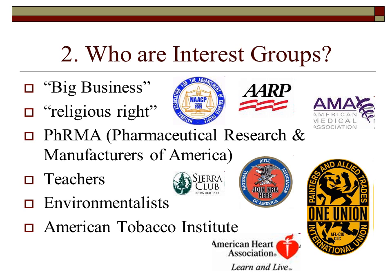Who are interest groups? There are many examples. Some have names, some don't. Some are referred to by nebulous terms — the religious right, big business, or big pharma. Others you can put names on: specific organizations that have parts which act as interest groups to promote certain public policy goals, like the AARP, the NAACP, or the Sierra Club.